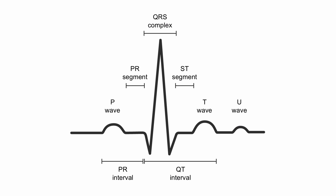In terms of deciding whether the test is positive for myocardial ischemia, the ST segment is really the key thing that we need to look at. To review what that means, the ST segment is this portion here, and it's defined as the end of the QRS right here, which is also known as the J point. We start there and we go to the beginning of the T wave.